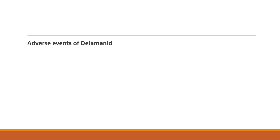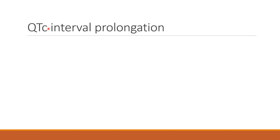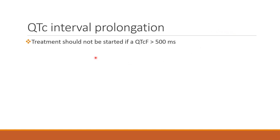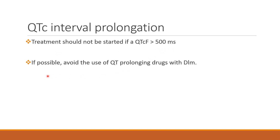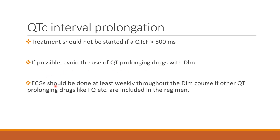The adverse events of Delamanid — the most common are nausea, vomiting, and dizziness. Another side effect of concern is QTc interval prolongation, which can cause torsades de pointes, sudden death, or ventricular arrhythmia. Treatment should not be started if the QTc interval is more than 500 milliseconds, and if possible, other QT-prolonging drugs should be avoided. ECG should be done at least weekly throughout the Delamanid course if other QT-prolonging drugs such as fluoroquinolones are added to the regimen.